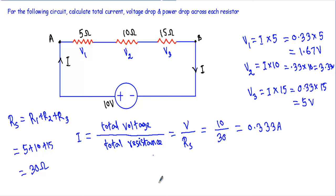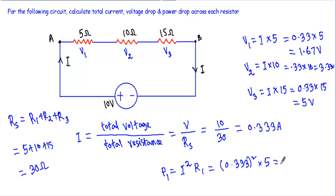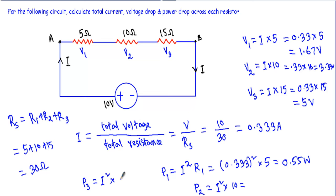To calculate the power drop across each resistor, I use P equals I squared times R. The power absorbed by the 5 ohm resistor: P1 equals I squared times R1 equals 0.333 squared times 5, giving P1 equals approximately 0.55 watts. Similarly, P2 equals I squared times 10, and P3 equals I squared times 15. That's it, thank you.